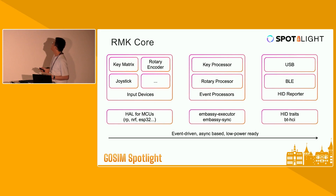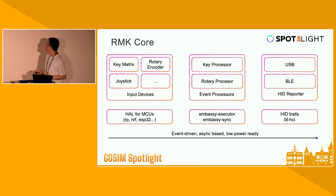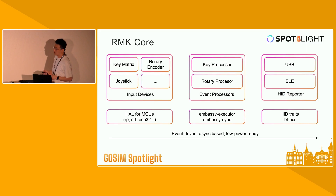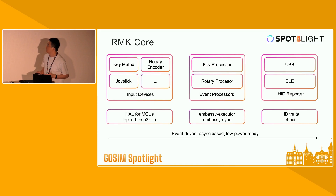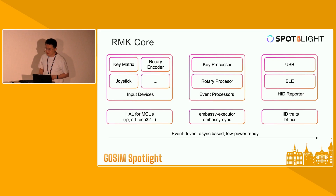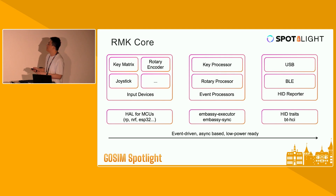Fortunately, we have great libraries here. For USB we have Embassy USB, and for Bluetooth we have BT-HCI. In the Rust embedded world, there is also a great Bluetooth host implementation called Trouble, which makes writing the Bluetooth reporter quite enjoyable. One more thing: the whole framework is fully event-driven, interrupt-driven, and async-based. That means you don't have to manually put your microcontroller into sleep or low-power mode — thanks to the Embassy framework, this is done automatically. If no key is pressed, your microcontroller is automatically in sleep mode, which is very cool.